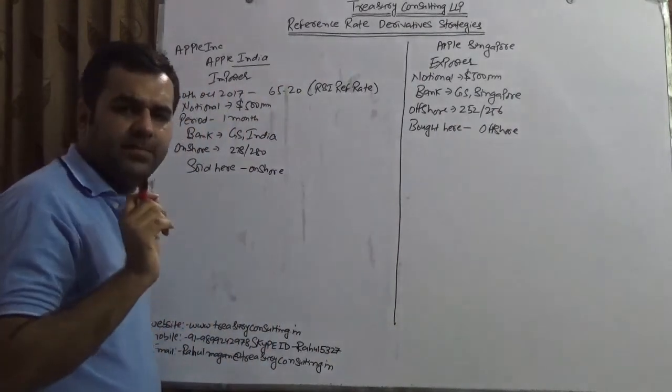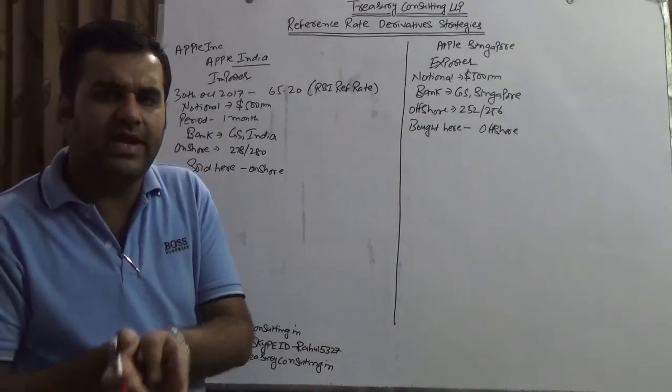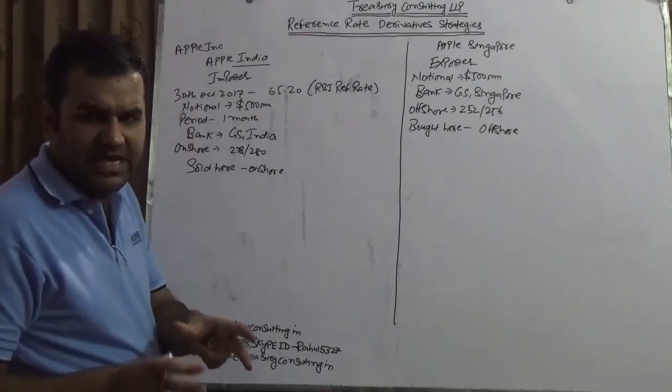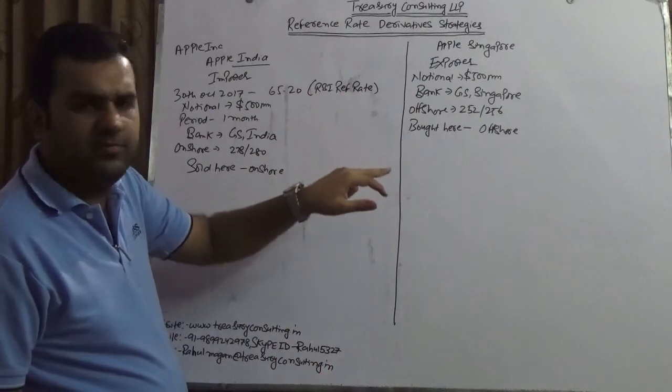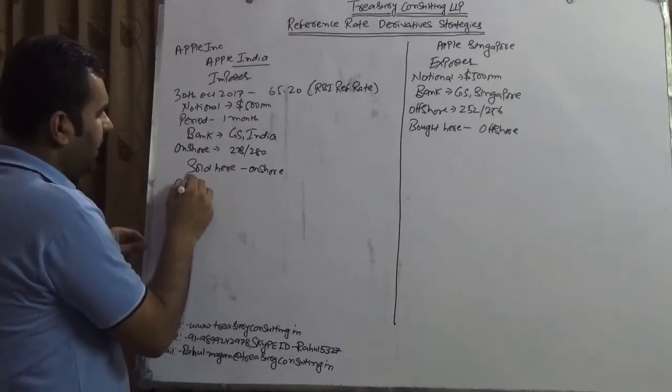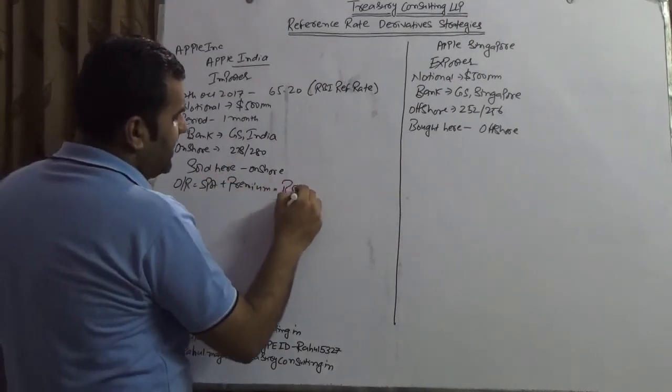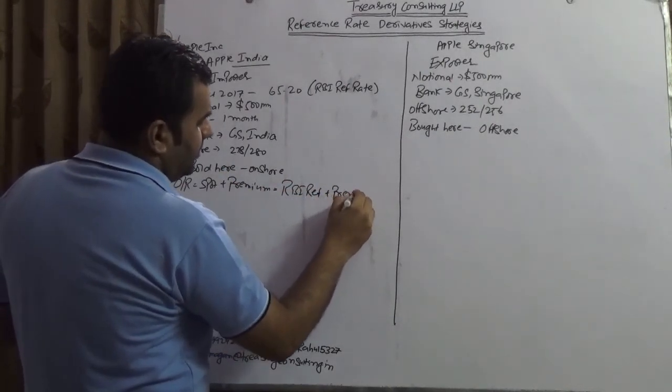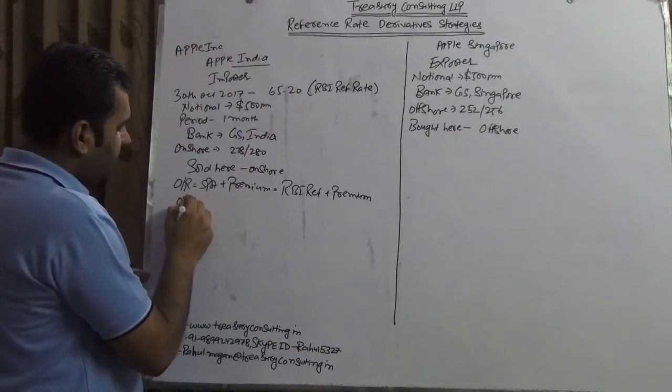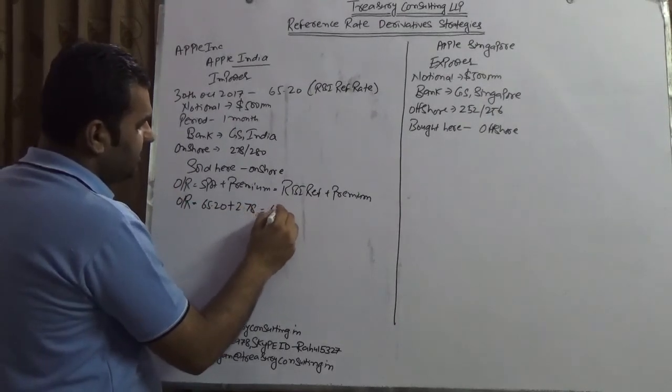The biggest problem is that the catalyst between both has to be same or this trade will never work. This trade is actually a rolling trade for 12 months. We are going to ask our bank Goldman Sachs to keep the reference rate same. The outright, which is always spot plus premium, is equals to RBI reference rate plus premium. In India once we are selling, the outright would be 65.20 plus 2 rupees 78 paisa, which is 67.98.